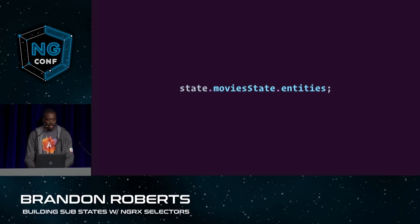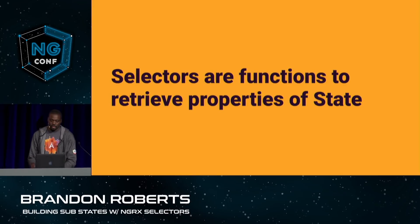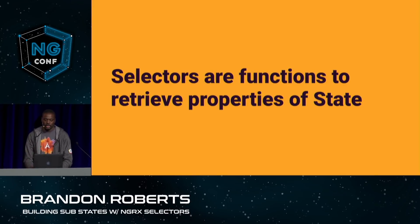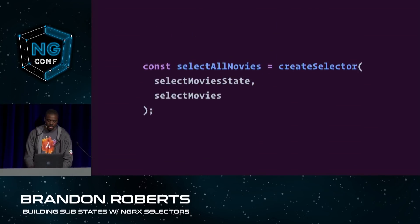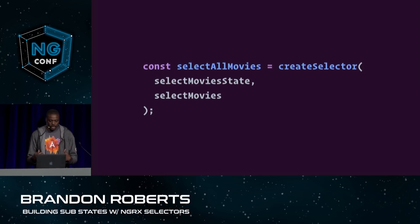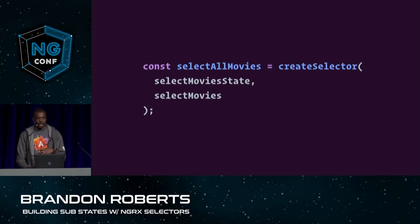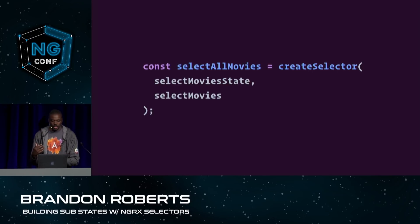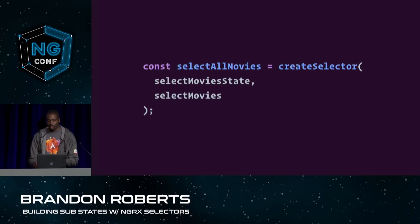Selector functions are predictable and consistent. At their simplest level, selectors are just retrieving properties from your state. You can also use selectors to combine them together, and this is where the createSelector function comes in. There are a couple of key things that enhance selectors, and they deal directly with performance.